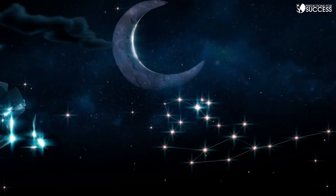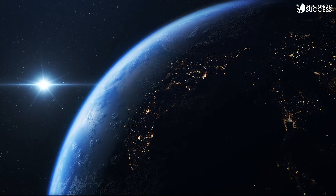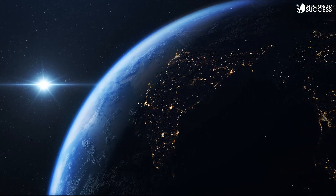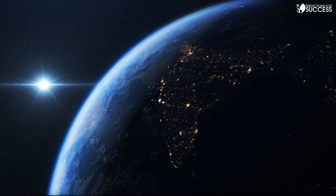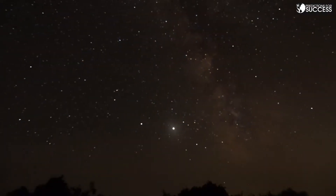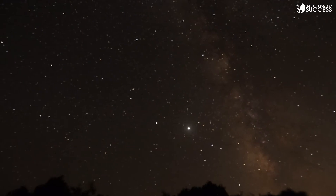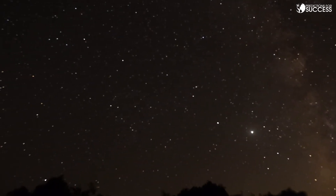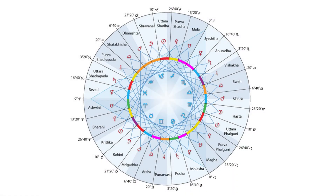These nakshatras are further divided into four quarters known as pada. For finer predictions, the placement of planets in pada is studied. Each zodiac covers about nine padas, and the nakshatra is also majorly used to determine the starting point of dasha, and in choosing an auspicious time for any important activity.